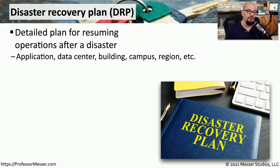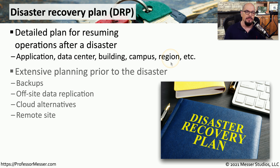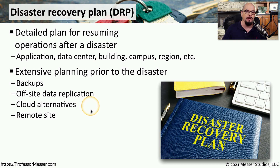Every organization should have a disaster recovery plan, or DRP. This is a plan that provides a step-by-step guide for resuming operations after a disaster has occurred. This plan could cover a number of different scenarios — it might be that we lose a single application, or maybe we lose an entire data center, or a hurricane comes through and we lose an entire region. In these disaster situations, we need a plan to help us get back up and running as quickly as possible. Truly successful disaster recovery plans have extensive work done prior to the disaster: backups ready to go, data replication handled at an off-site location, alternatives in the cloud ready to go, and a secondary site where you can move all of your operations.